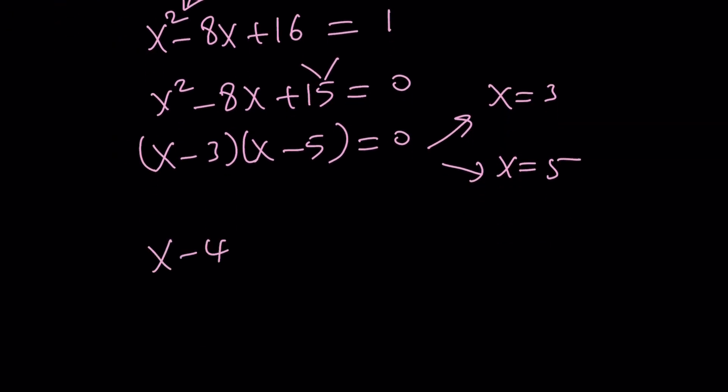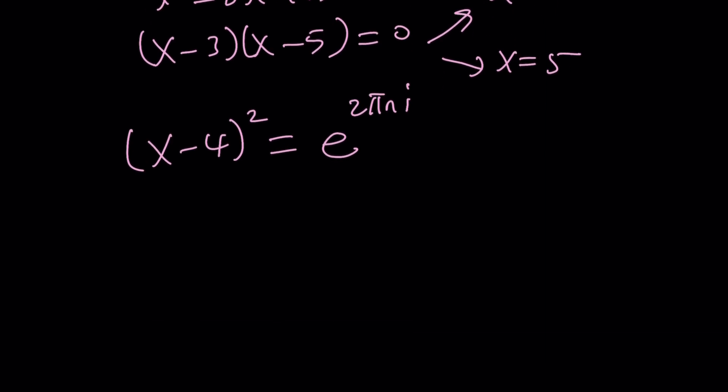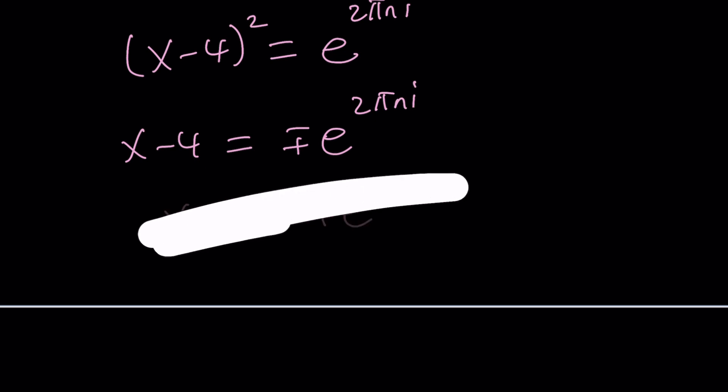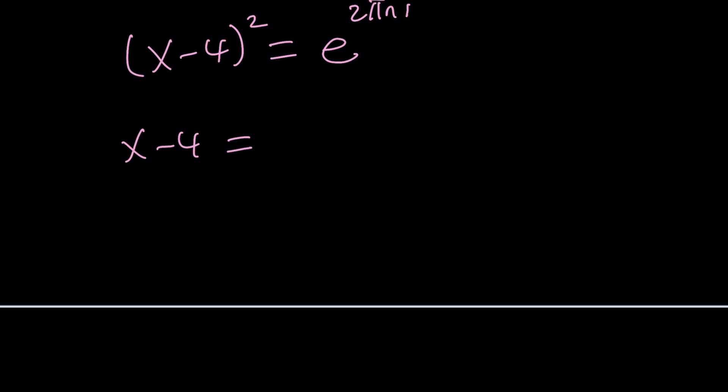But, what would happen if we wrote it as follows? Like, replace the one with e to the power 2 pi n i, and then square root both sides, looking at both cases of the square root. Like you can say, okay, x minus 4 is equal to plus minus e to the power 2 pi n i, and then we can kind of add for both sides, 4 plus minus e to the power, wait a minute, did I forget to cut in half? Yeah, I was supposed to cut this in half, which should give me plus minus e to the power pi n i.